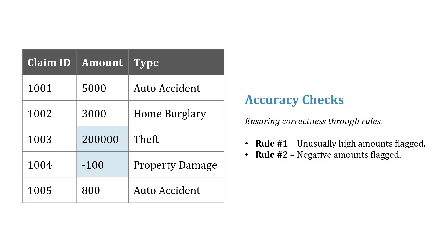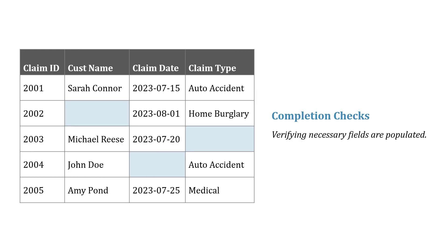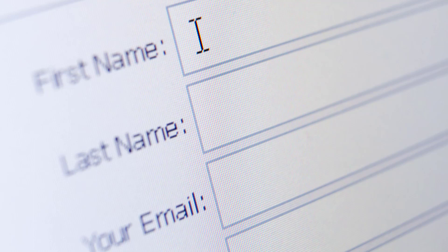We could also use data validation as one of the techniques — doing things like accuracy checks, validating that the data follows certain rules. For example, maybe there's a rule where unusually high amounts should be flagged, like $200,000 for auto theft, or flagging negative amounts for property damage. We could also have completeness checks, verifying that necessary fields have been populated. One way to fix this downstream is if data is input through a form, there are proper controls ensuring required fields are completed and the data is in the proper format and length.